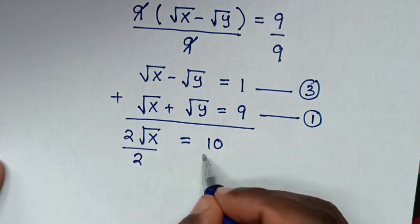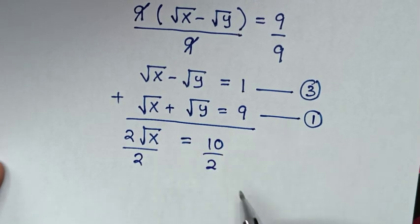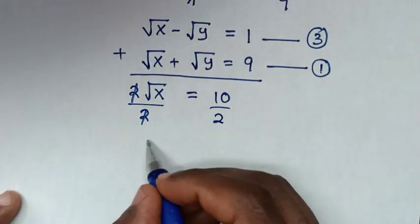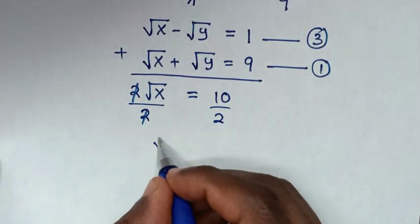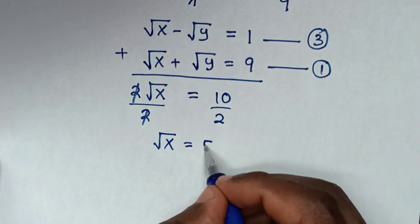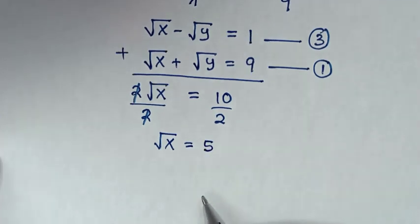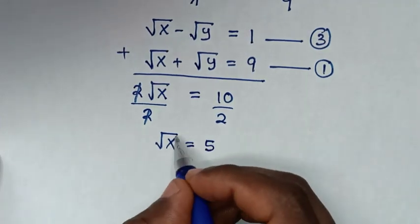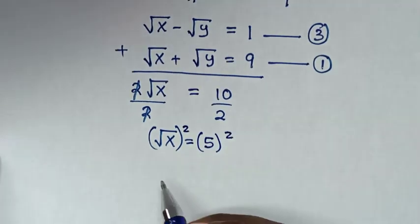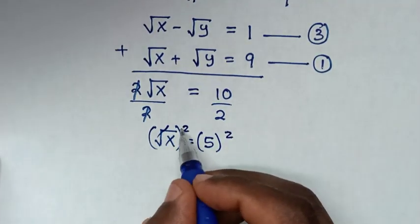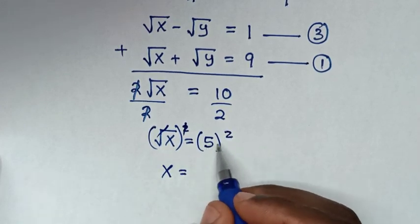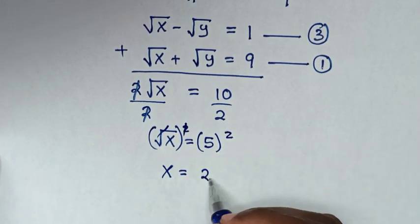We divide both sides by 2, giving √x equals 5. To find x, we square both sides: the square root cancels, so x equals 5 squared, which is 25.